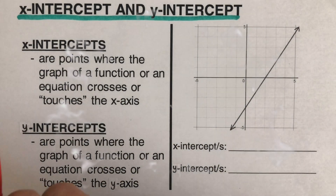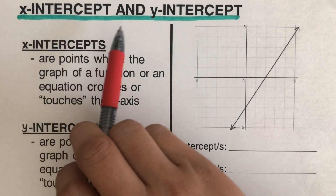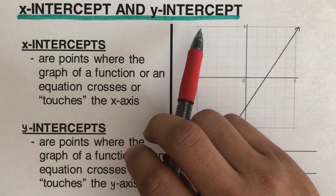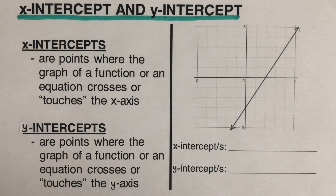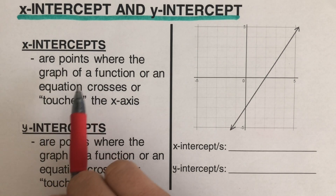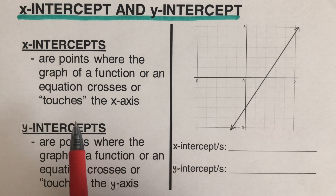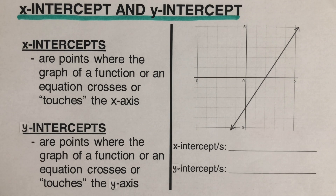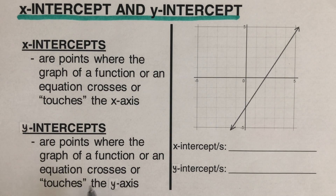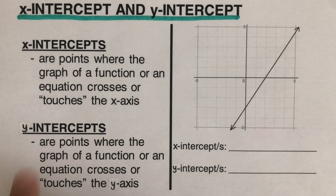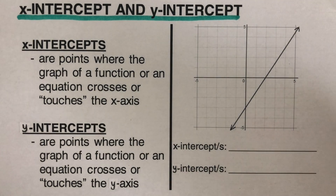In this video we are going to determine the x-intercept and the y-intercept of a given graph. X-intercepts are points where the graph of a function or equation crosses or touches the x-axis — essentially the value of x when y is zero. On the other hand, y-intercepts are points where the graph crosses or touches the y-axis, or the value of y when x is zero.